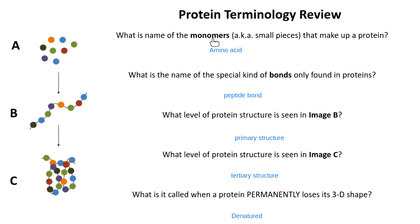When I use the word monomer, remember it means small piece. When we put together a bunch of monomers, we build something called a polymer. A polymer is when I put a lot of things together. When you think about proteins, they're a polymer. Some other polymers in the body include nucleic acids, lipids, and carbohydrates.